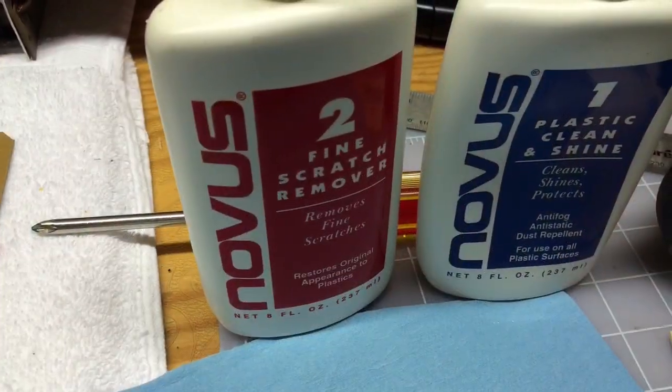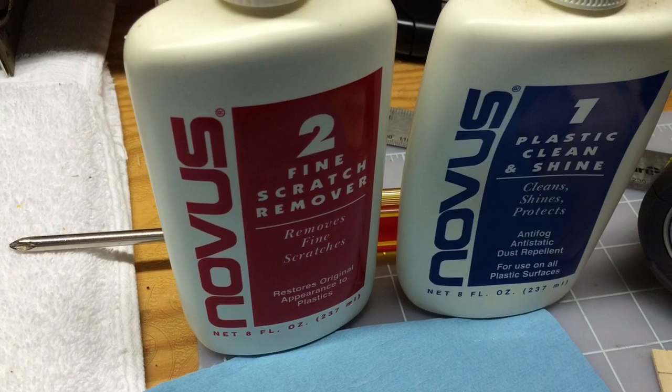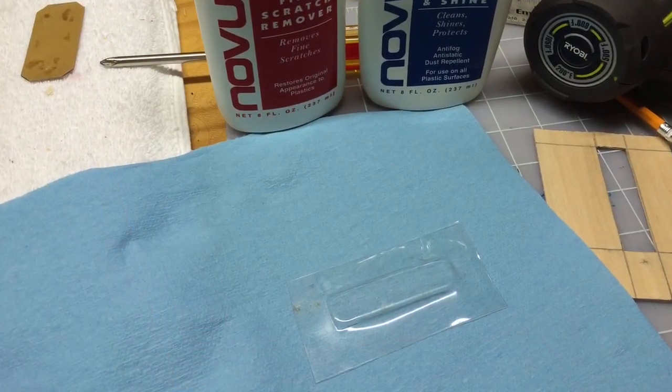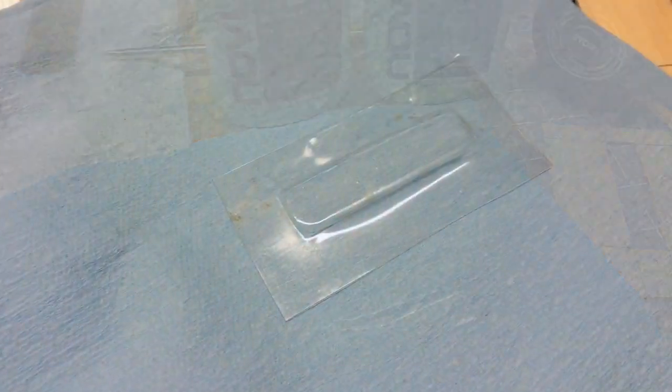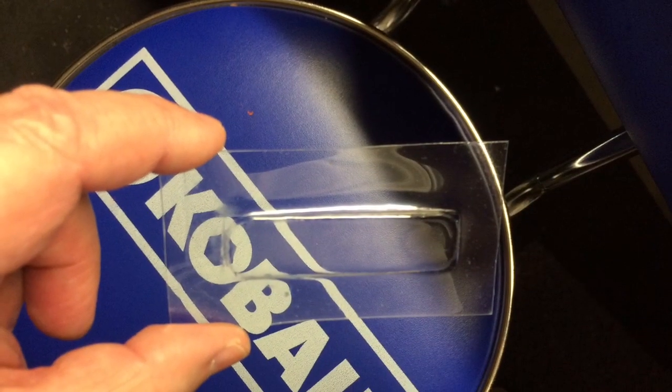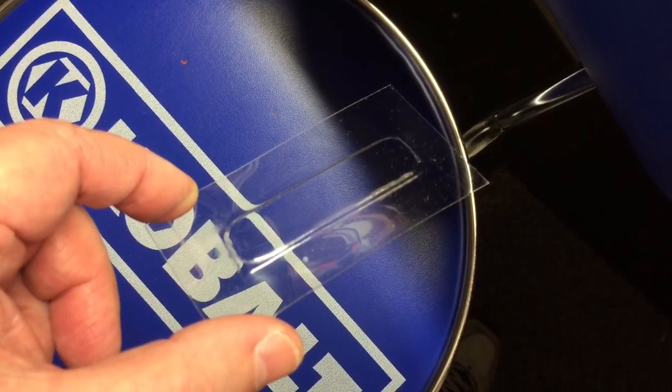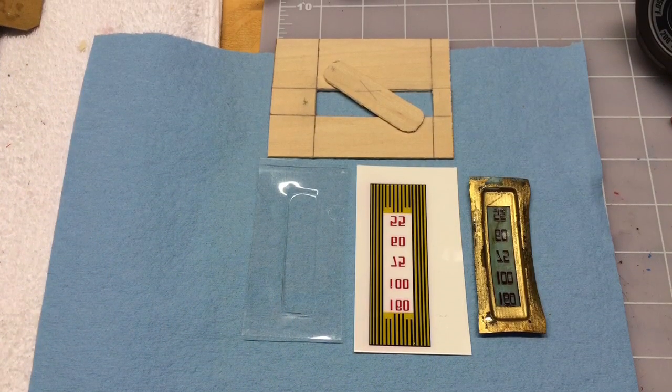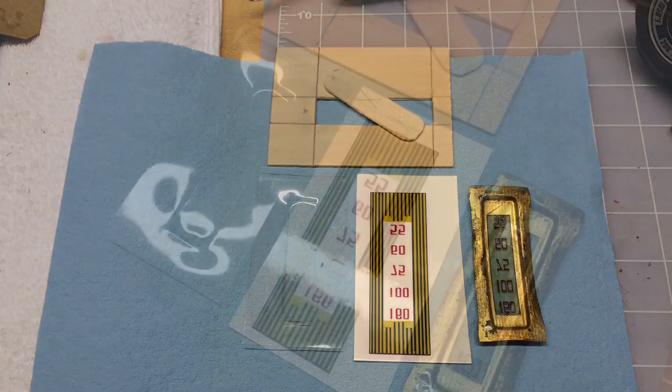So next I pulled out my Novus polish number one, number two. Started out with my number two. And again, just knocked off some of the imperfections that I created when I was forming the plastic. Got it all cleaned up nicely. I know it's kind of hard to see, so I changed the background here so it shows up a little bit better on some of the photographs.